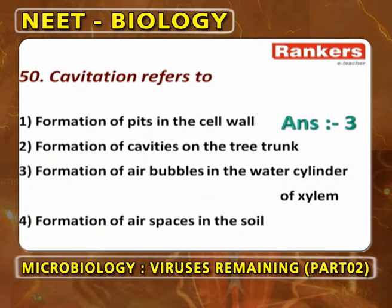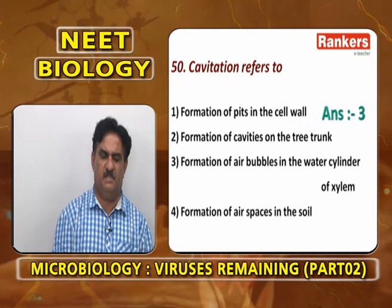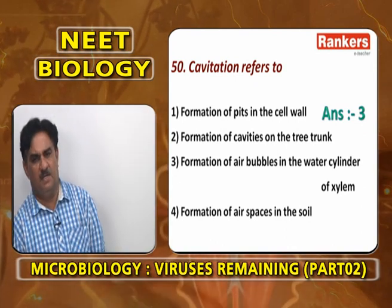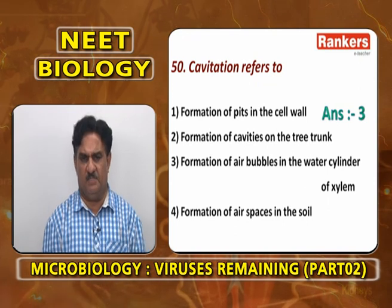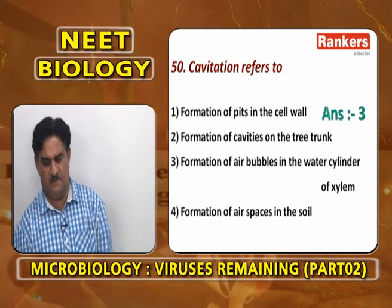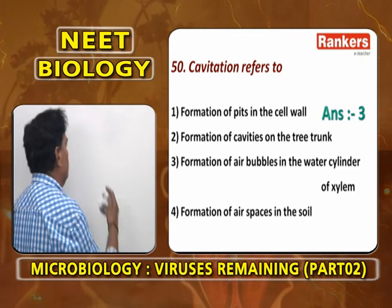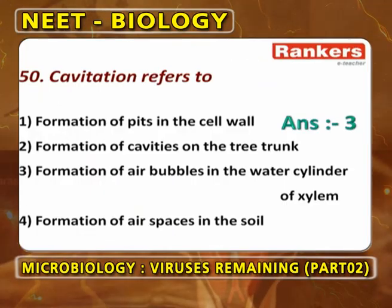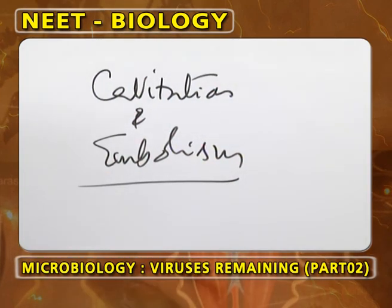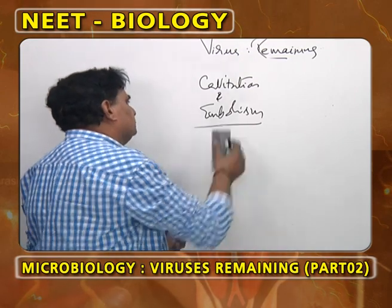Cavitation refers to cohesion tension theory: due to transpiration pull, water is absorbed into xylem; because of maximum adhesion and cohesion, they form a continuous water column. But when a small air bubble is formed, the water column is broken. Formation of an air bubble is called cavitation. Destruction of the water column due to the formation of an air bubble is called embolism.